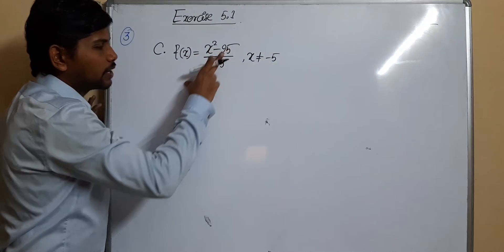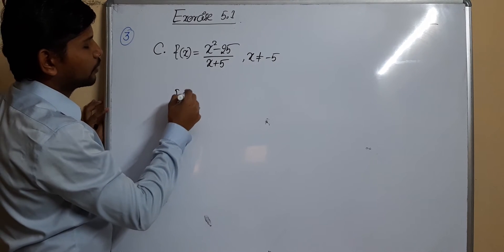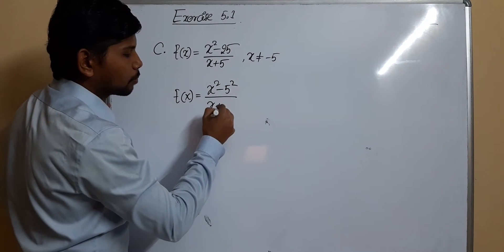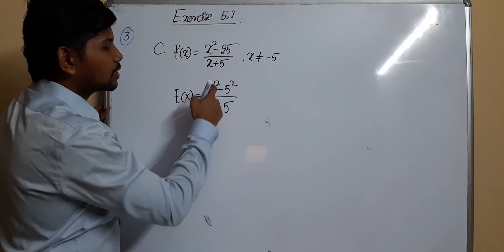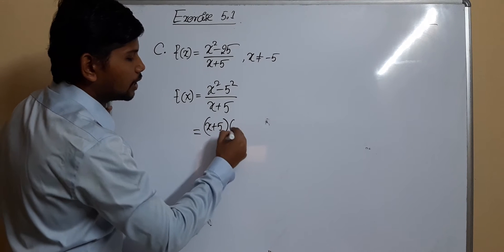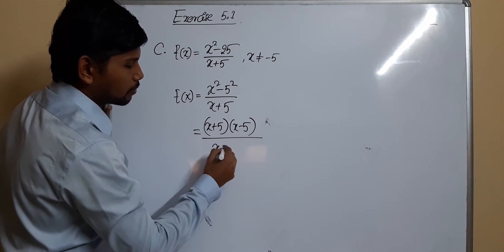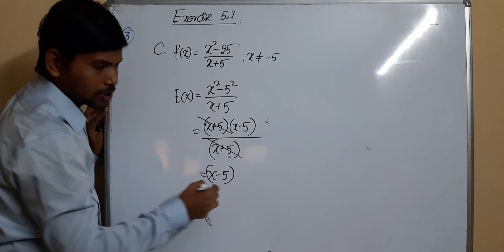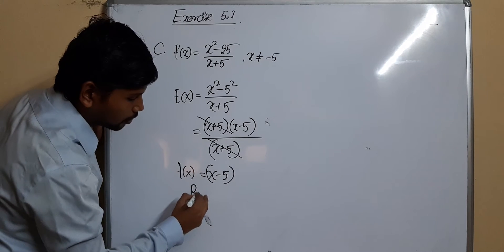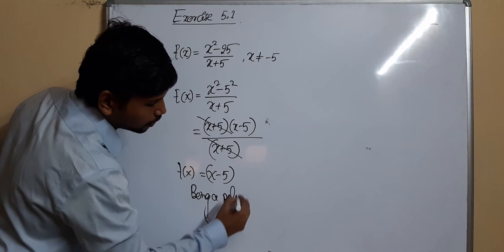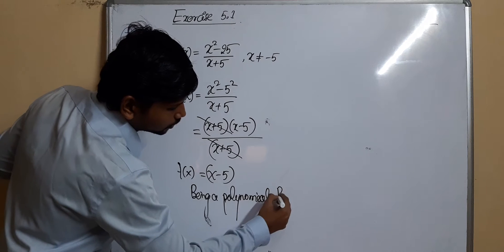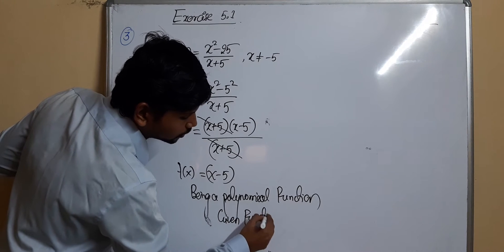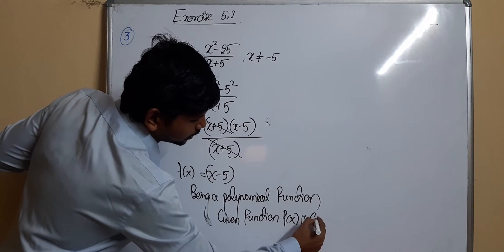For f(x) = (x² − 25)/(x + 5), simplify by writing x² − 25 as (x + 5)(x − 5) using the difference of squares formula. Dividing by (x + 5) cancels, leaving f(x) = x − 5, which is a polynomial function. Therefore the given function is continuous.